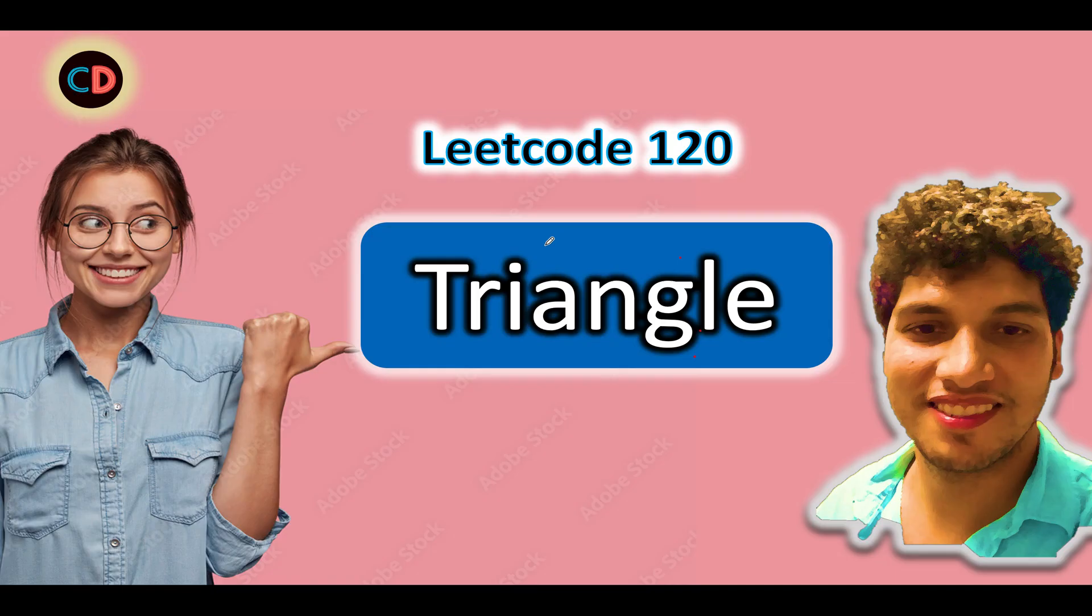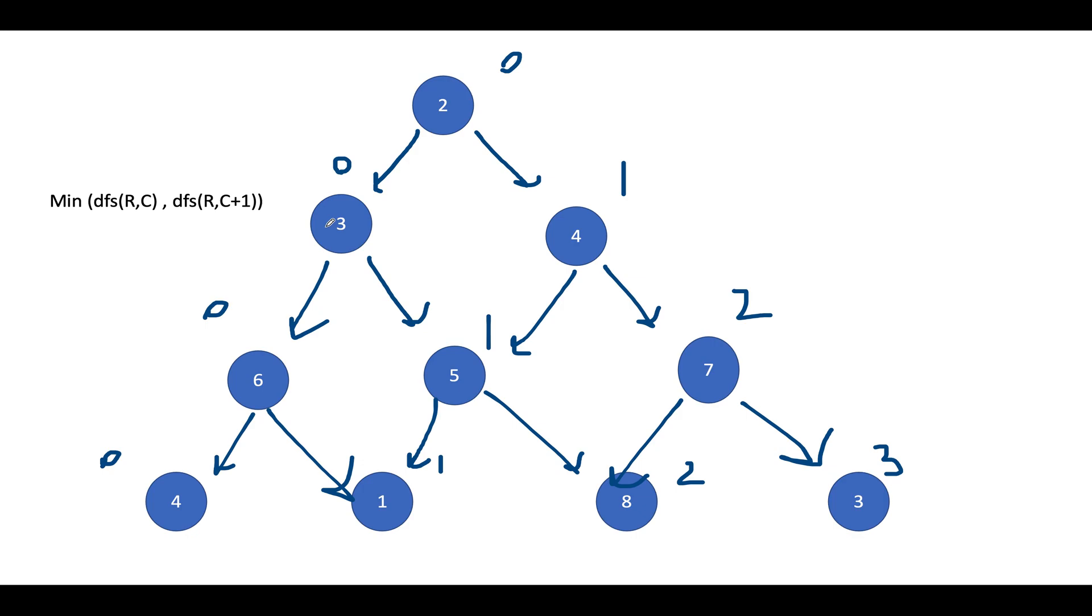LeetCode 120, triangle. In case if you have any doubt understanding this question or if you want to ask anything from me in general with respect to placement, jobs or internships, feel free to drop a message on the telegram group or the discord server of coding decoded. Both the links are stated below. Now let's get started. I have taken the same example that was explained in the question. We have the triangle as 2, 3, 4, 6, 5, 7, 4, 1, 8, 3. What we need to do in this question, we need to start a traversal from the topmost row, topmost cell and we need to move at any cell in the last row. So it could be any cell in this last row and that would be the terminal state.